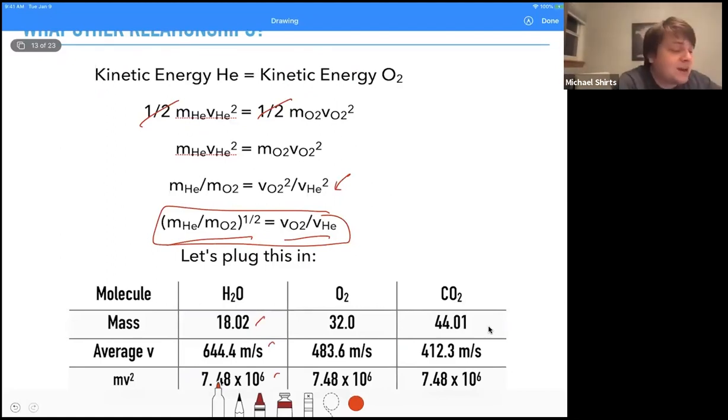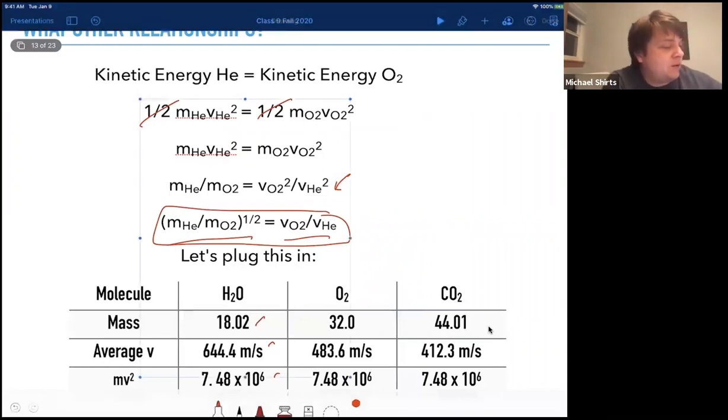Even if we have a hard time accessing the speeds themselves, we know that the ratio of the speeds is simply the square root of the ratio of the masses. So how can we use this for anything useful? Why do we care?